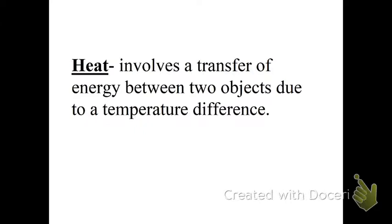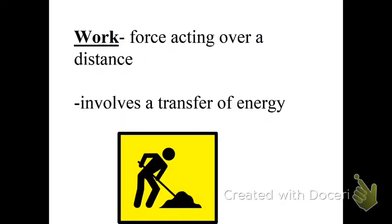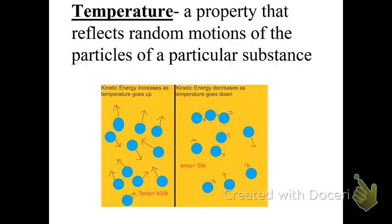Heat involves a transfer of energy between two objects due to their temperature difference. Please recall that temperature and heat are not the same thing. Work is force acting over distance, and it involves a transfer of energy. These are all basic concepts. Temperature is a property that reflects random motions of the particles of a particular substance. What happens when I heat them up? Speed them up. So temperature is directly related to kinetic energy. Velocity depends on mass.